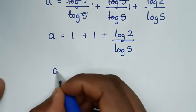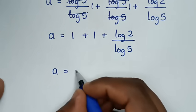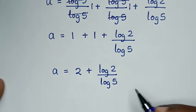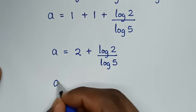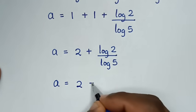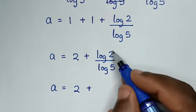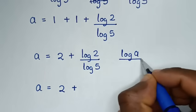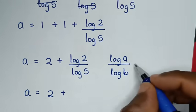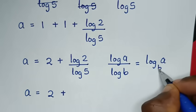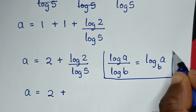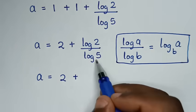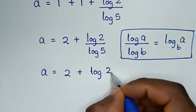Then it will be a is equal to 2, plus log of 2 over log of 5. This part, log of 2 over log of 5, is in the form of the rule log a over log b which is equal to log of a base b. So from this rule, log of 2 over log of 5 becomes log of 2 base 5. So the final answer for the value of a is 2 plus log of 2 base 5.